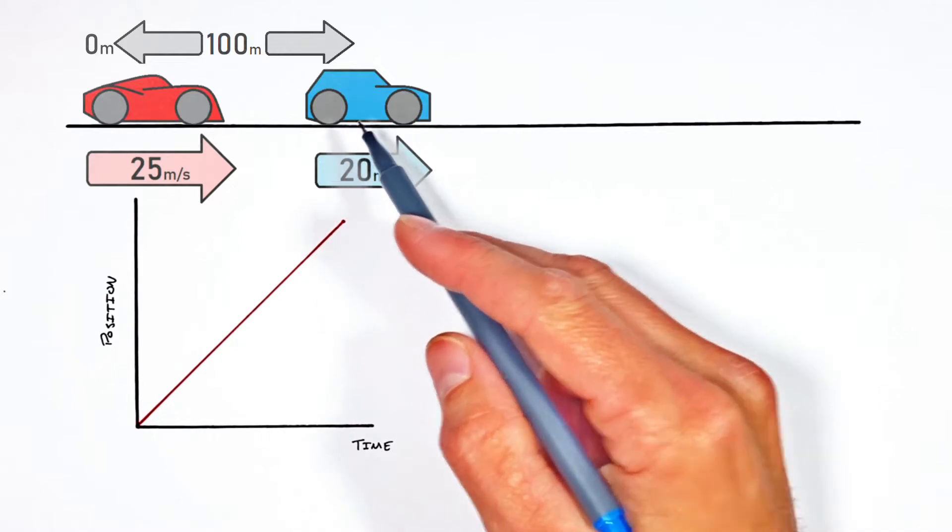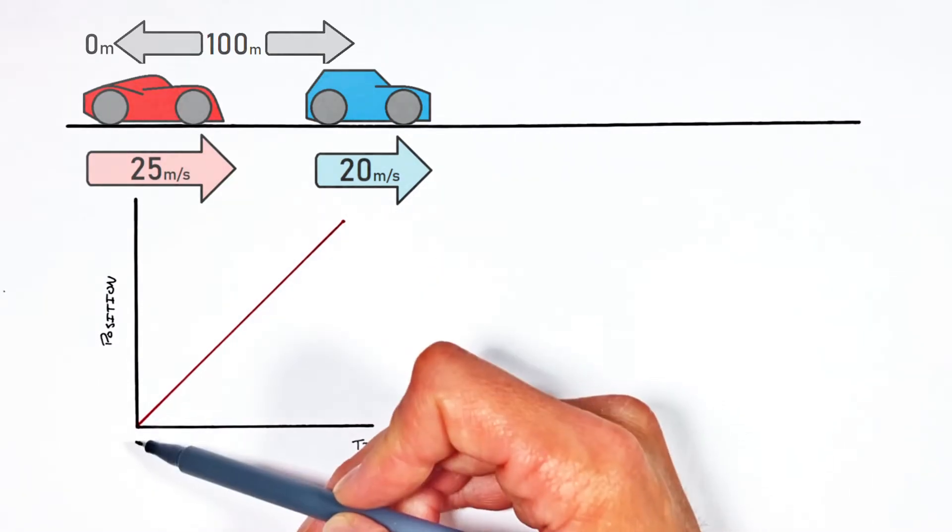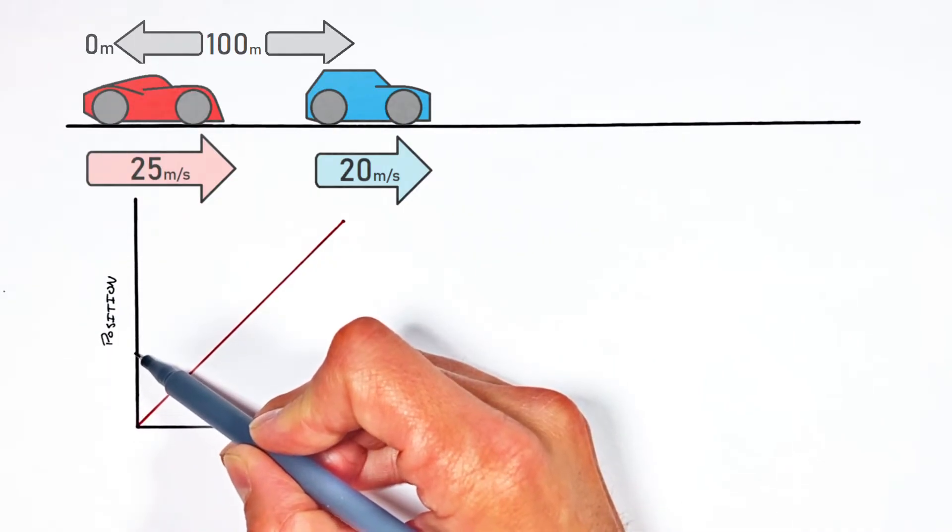this slower car which is starting out 100 meters ahead is going to begin on our graph 100 meters further down the road. Or on our position axis, which is our y-axis, it's going to start at a position of 100.